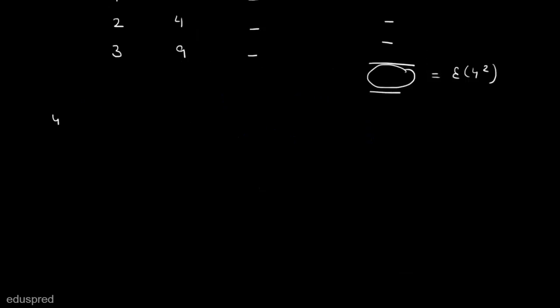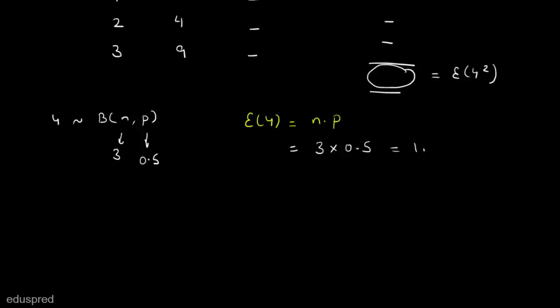Y follows a binomial distribution with parameters N = 3 and P = 0.5. We have a direct formula: the expected value of Y equals N multiplied by P. So the expected value of Y is equal to 3 multiplied by 0.5, which equals 1.5.